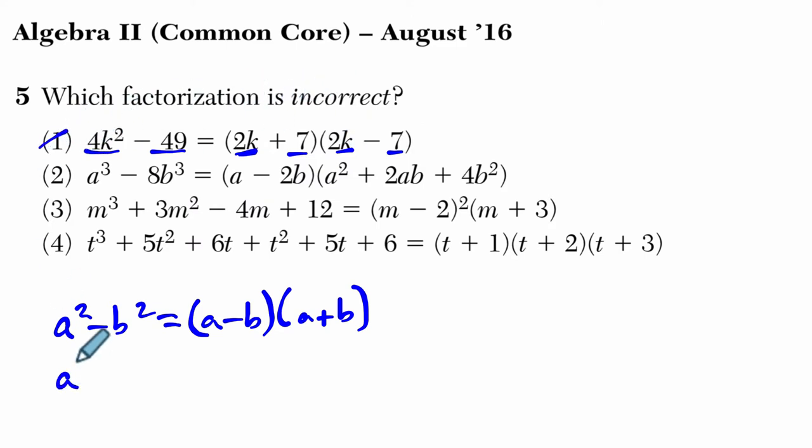Next, we have the difference of cubes. Choice 2. a cubed minus b cubed is going to equal a minus b times a squared plus ab plus b squared.